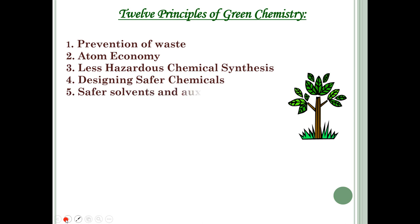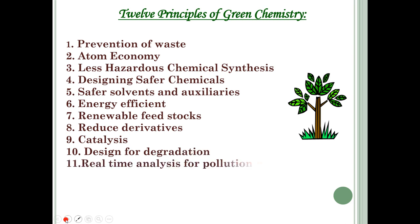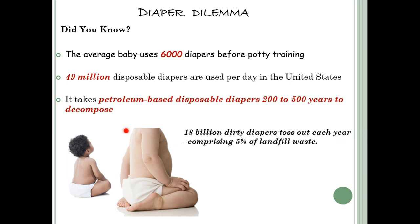All these benefits are achieved by the 12 principles of green chemistry. Whenever we are designing a new synthesis, all these principles have to be kept in mind. The first and most important principle is prevention. You must have heard the proverb: prevention is better than cure. To cure a disease takes time, effort, and money, so it is better to prevent ourselves from getting it.